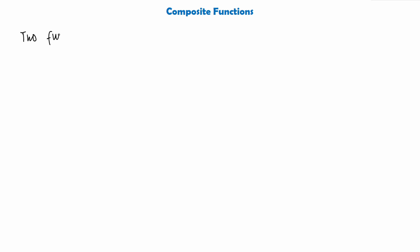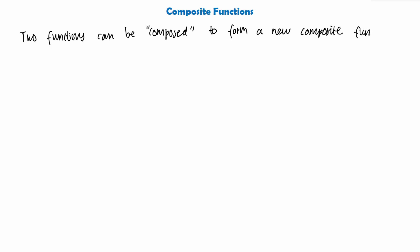Simply put, to compose two functions would mean to insert one function into another function to get a brand new function. So we would say that two functions can be composed to form a brand new function called a composite function, and we'll look at what we mean by this.